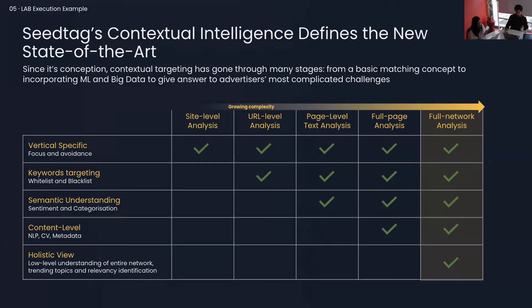Touching on contextual targeting technology — contextual has been around for years; in its most basic form it included keyword targeting, but it now incorporates machine learning and big data. Siftag's proprietary technology incorporates multiple variables to generate deep-level page categorization and human-like understanding of any page, moving from site-level analysis through URL and page-level text analysis, full-page analysis, and full network analysis. This incorporates vertical categorization, keyword targeting, whitelisting and blacklisting, semantic embedding to understand nuances, tone and sentiment, NLP techniques, metadata analysis, and content listening — understanding topical trends and keyword relevancy — culminating in a total holistic network analysis.